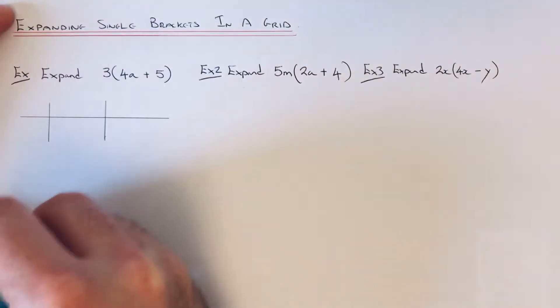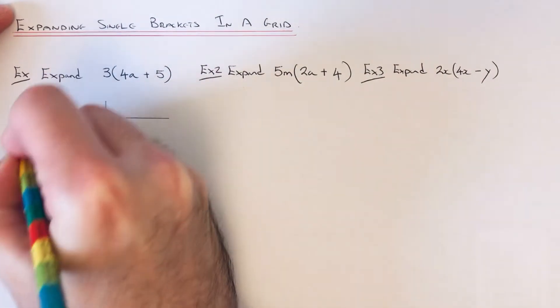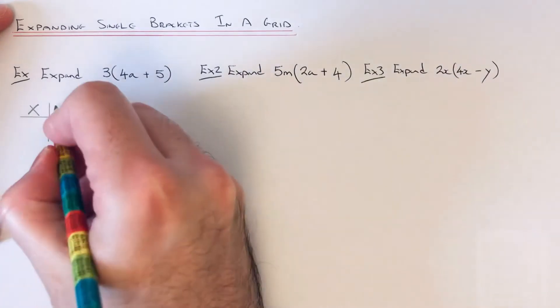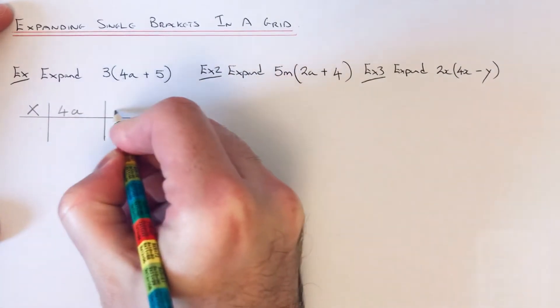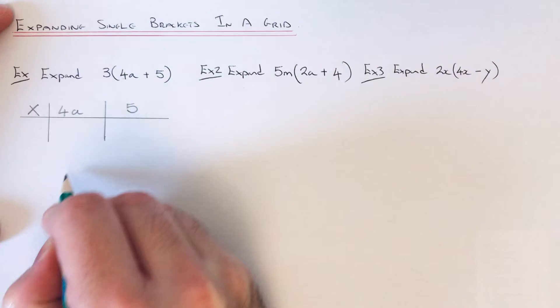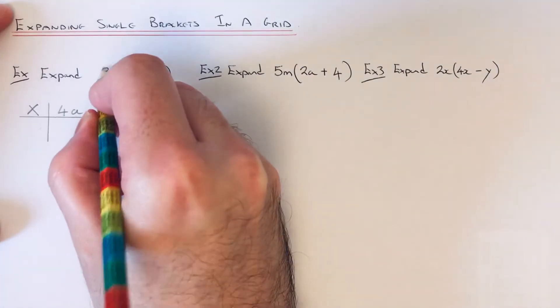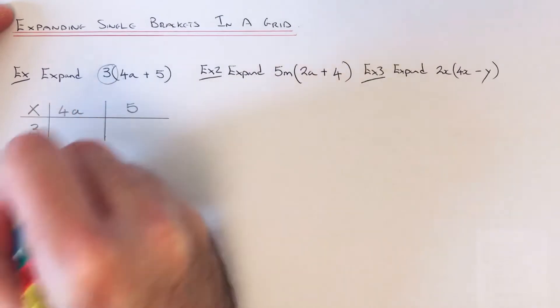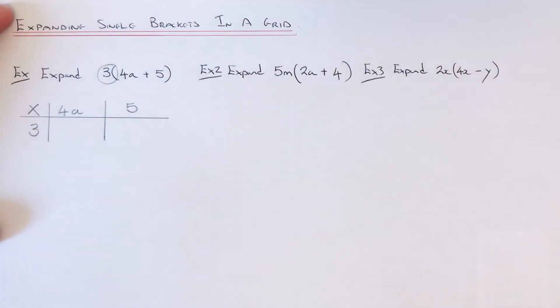We need a multiplication sign in the corner. We're going to put these two terms in the bracket across the top, so we've got 4a and 5, and the number that we've got to multiply the bracket by is 3, so let's put that at the start. Let's work out what goes inside the table now.